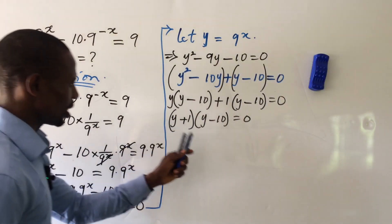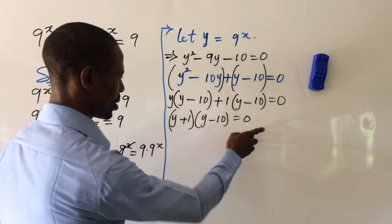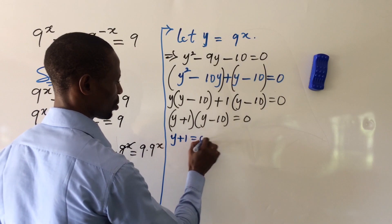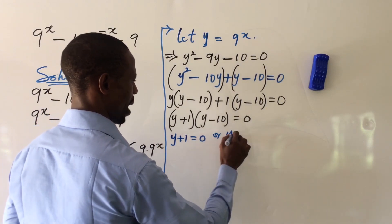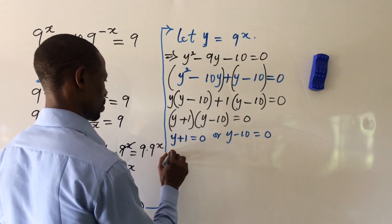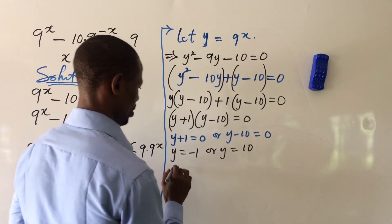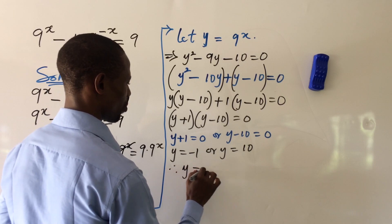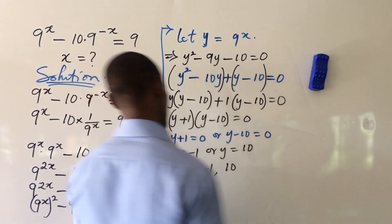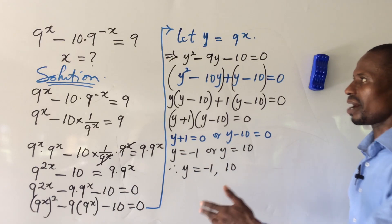We apply the zero product rule, equating each factor to zero. So y plus 1 equals zero, giving y equals minus 1, or y minus 10 equals zero, giving y equals 10. Therefore y equals minus 1 or y equals 10.